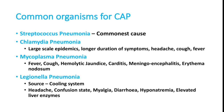The most common cause for community acquired pneumonia is Streptococcus pneumoniae. Streptococcus pneumoniae causes classical lobar pneumonia. The patient will have typical symptoms: high degree fever, chills, rigors, sputum production, and blood in the sputum — all these things are very common.